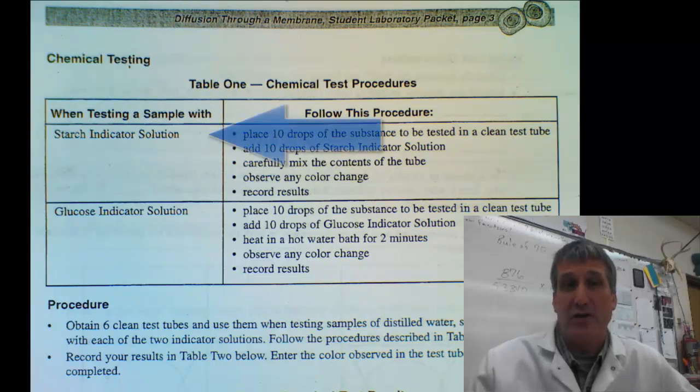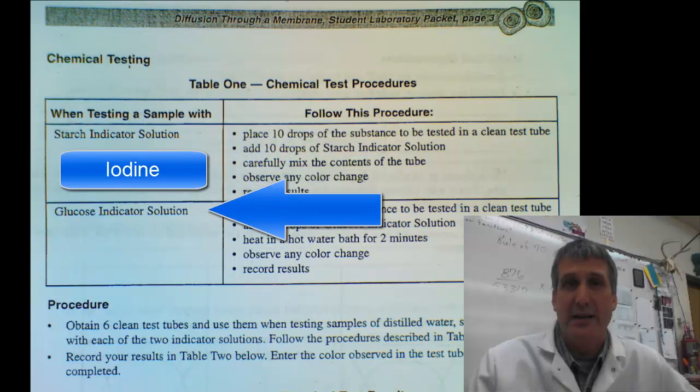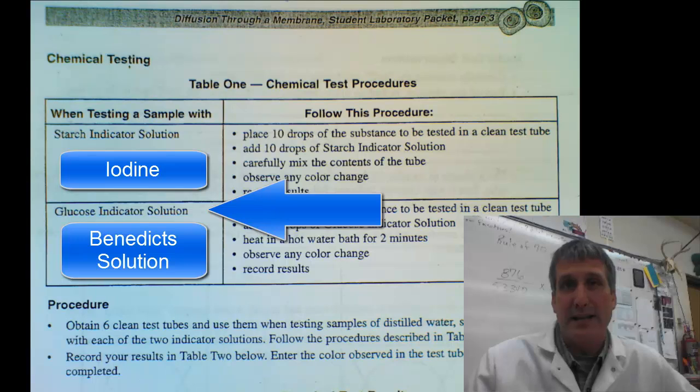We're going to use two different indicators. We're going to use starch indicator solution, which is actually iodine, and we're going to use a glucose indicator solution, which is Benedict's solution.